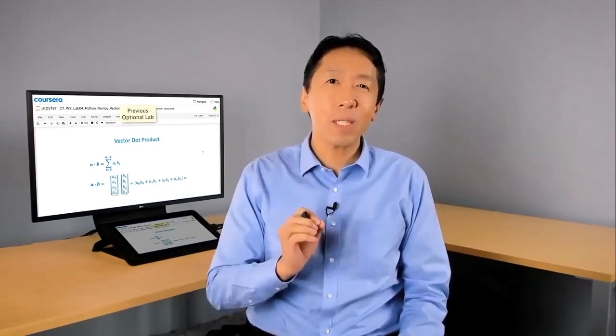So that's it, you now know multiple linear regression. This is probably the single most widely used learning algorithm in the world today. But there's more. With just a few tricks, such as picking and scaling features appropriately, and also choosing the learning rate alpha appropriately, you'll be able to make this work much better. So just a few more videos to go for this week. Let's go on to the next video to see those little tricks that will help you make multiple linear regression work much better.